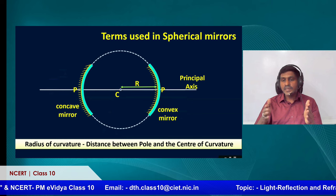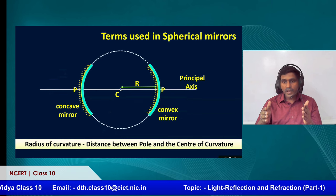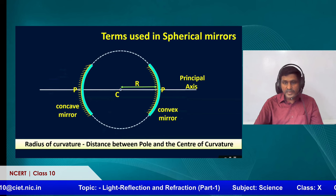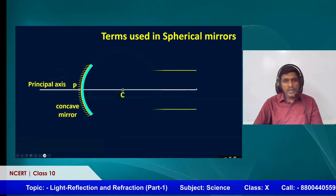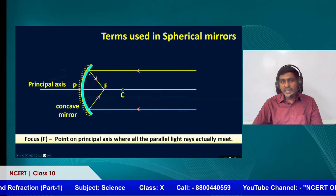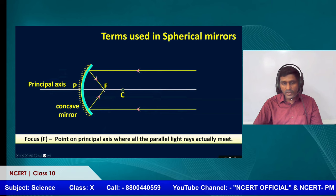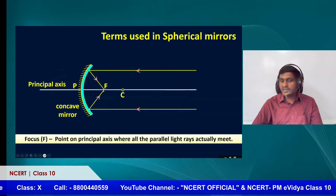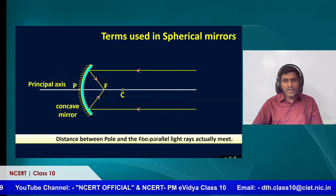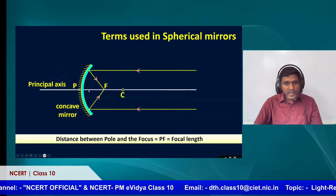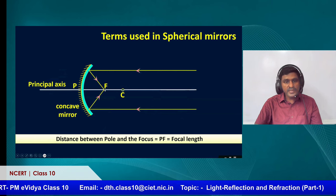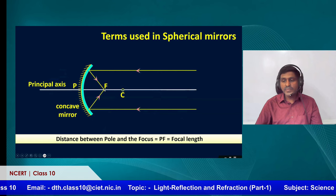The distance between the center of curvature and the pole is called the radius of curvature. If parallel beams fall on the reflecting surface of a concave mirror, they merge at a particular point called the focus. The point on the principal axis where all parallel rays actually meet is called the principal focus. The distance between the pole P and the focus F — denoted PF — is called the focal length.